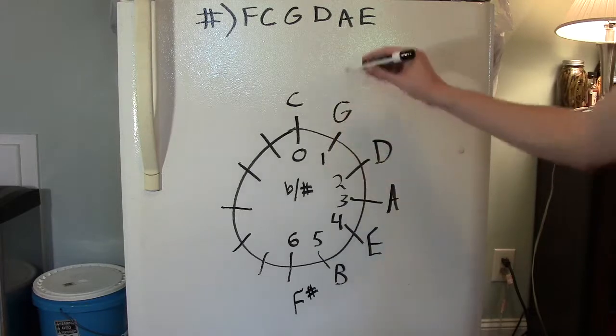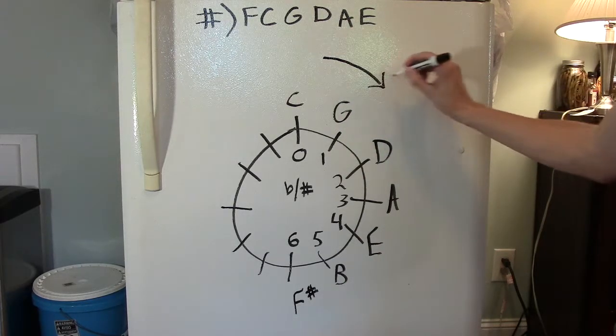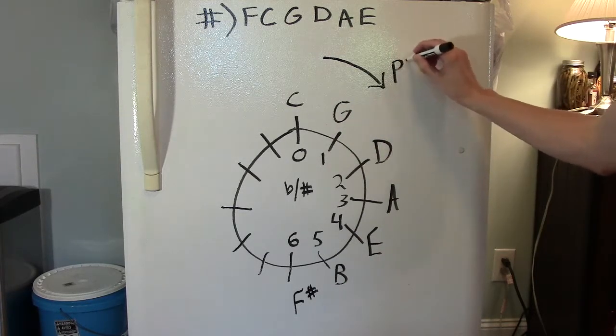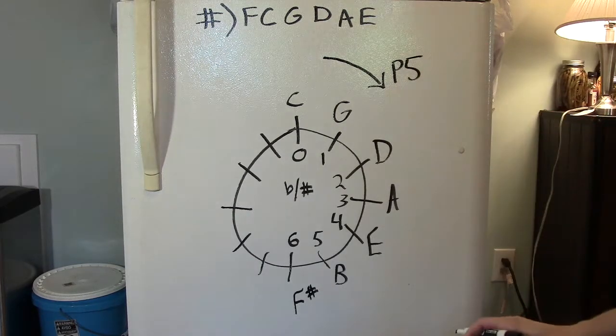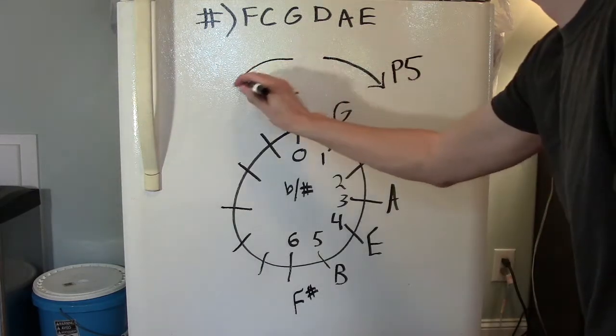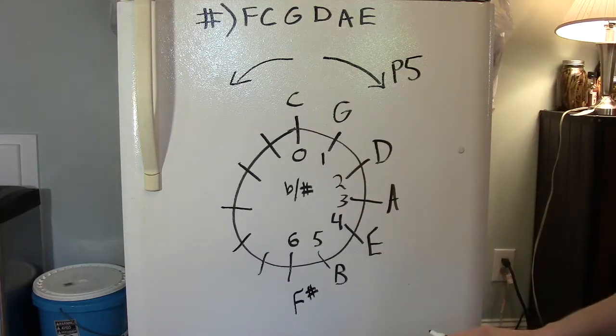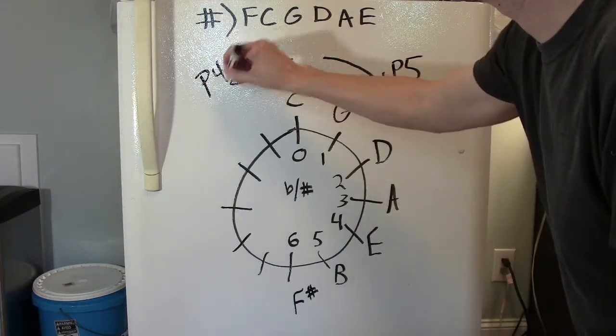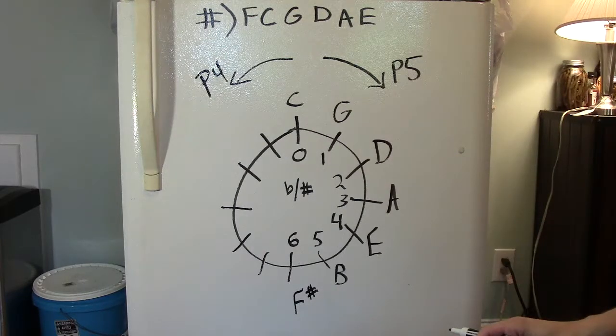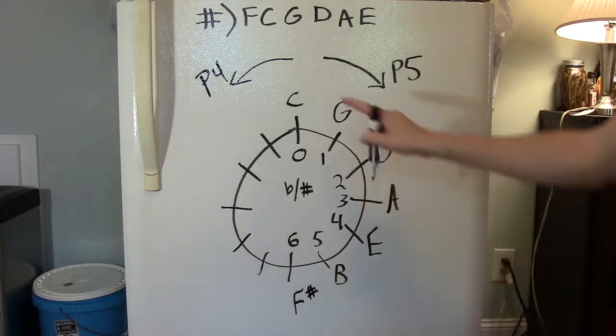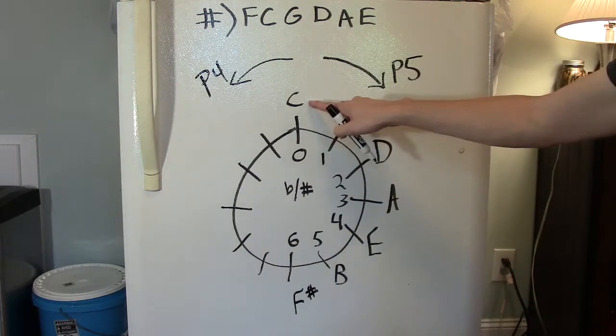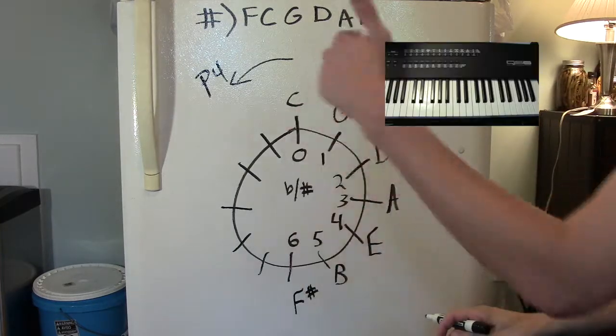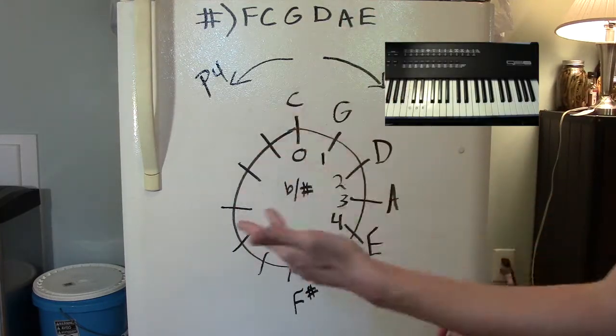Starting at the key of C, we've been moving up by perfect fifths to discover each new key. But we could go the other direction and change that interval to perfect fourths. Now, let's start counting up from C major, but only by fourths this time. One, two, three, four.